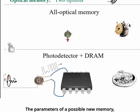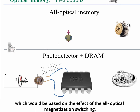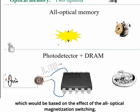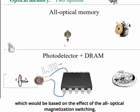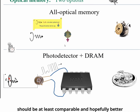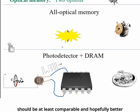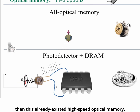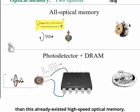The parameters of a possible new memory based on the effect of all-optical magnetization switching should be at least comparable and hopefully better than this already-existing high-speed optical memory.